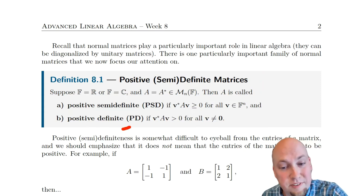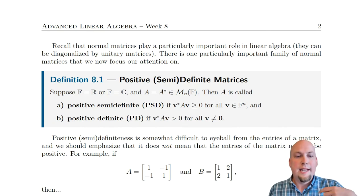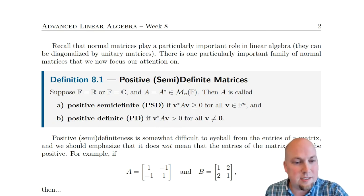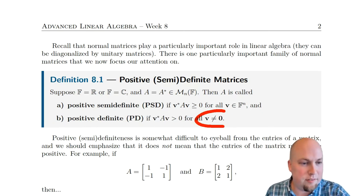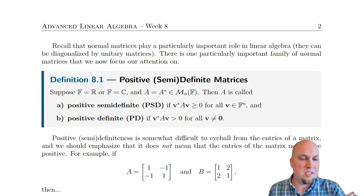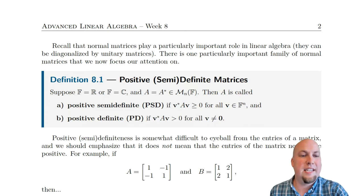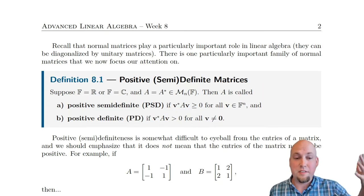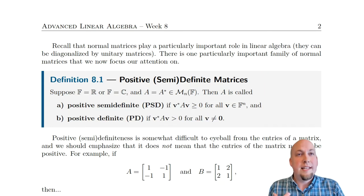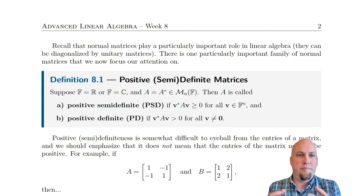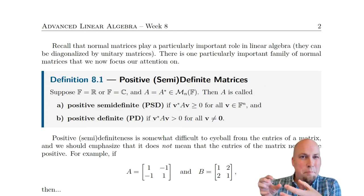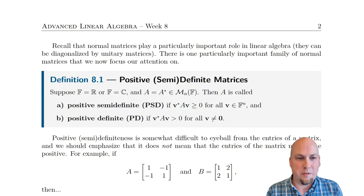We say that a matrix is positive definite, or PD for short, if that inequality is strict whenever it could be strict — in particular, whenever V is not the zero vector. Of course if V is the zero vector you get zero on the left, but if the inequality is strict for all other vectors, then it's positive definite. Positive definite matrices are sort of the matrix version of numbers that are strictly bigger than zero, not just bigger than or equal to zero.